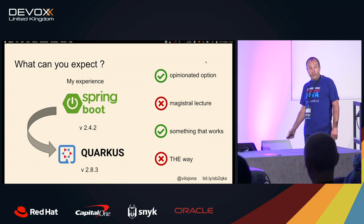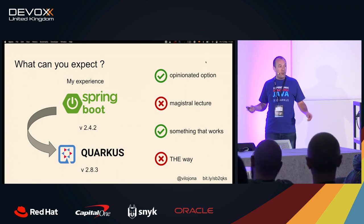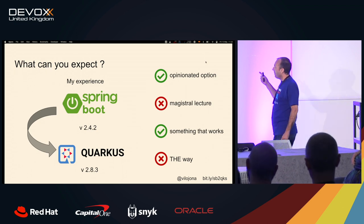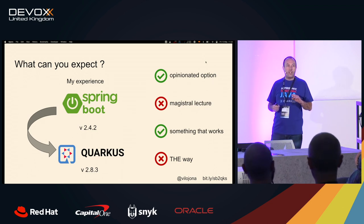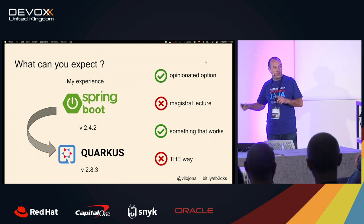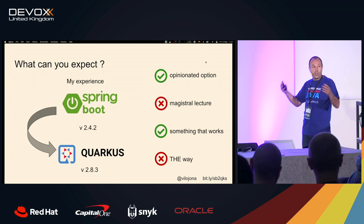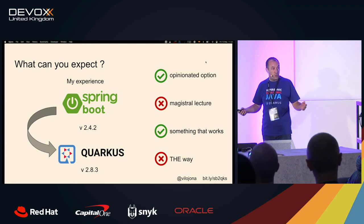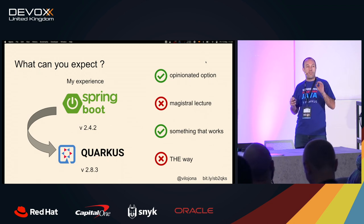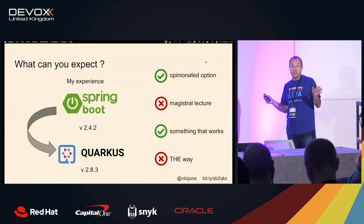So what can you expect from this presentation? This is my opinion, only my opinion. Probably you can find issues or ways to do things better. It's not a magistral lecture, so I'm not trying to teach you how to do things. This is not the Mando way — this is only one way, and I expect that you use it as a starting point for doing your own migration if you want to do a migration. This is something that works, but the intention was not to do perfect code — just to do a migration from Spring Boot to Quarkus fast, and that works.